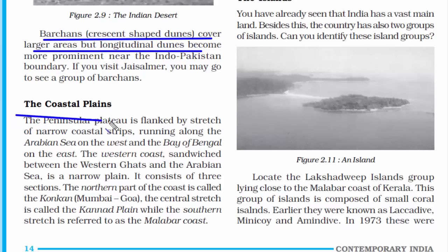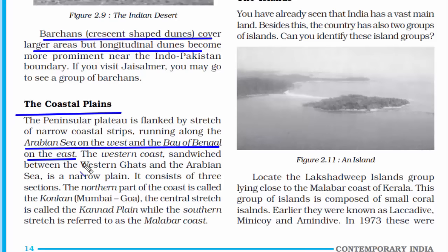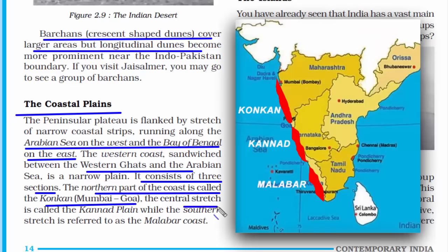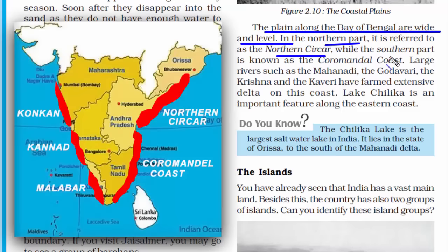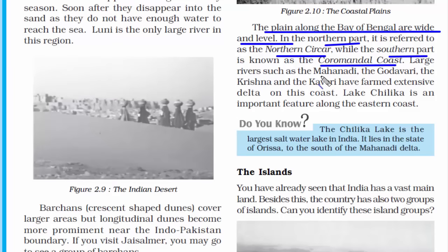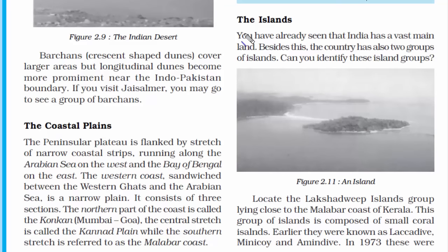India is a peninsula country with water on three sides — the Arabian Sea to the west and the Bay of Bengal to the east. The western coastal plain is narrow and divided into three sections: the northern part is called the Konkan (Mumbai to Goa), the central stretch is the Kannad Plain in Karnataka, and the southern stretch is the Malabar coast in Kerala. The eastern coastal plains are comparatively wider — the northern part is called the Northern Sarkar and the southern part is the Coromandel coast. Rivers such as Mahanadi, Godavari, Krishna, and Kaveri drain into the eastern side, while Narmada and Tapi drain into the western side.